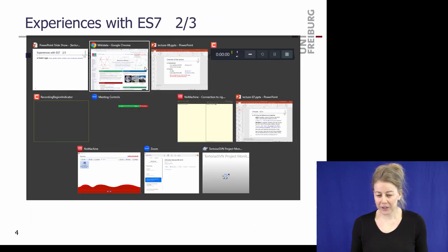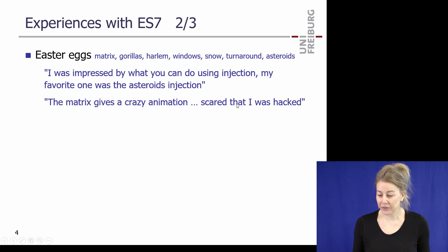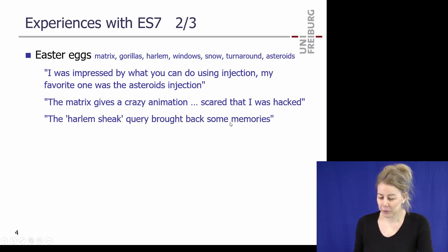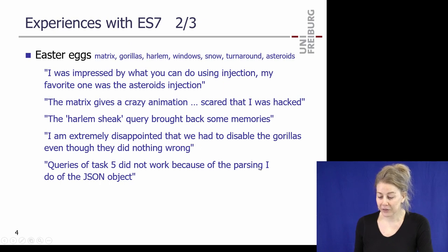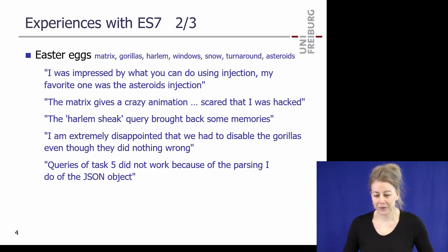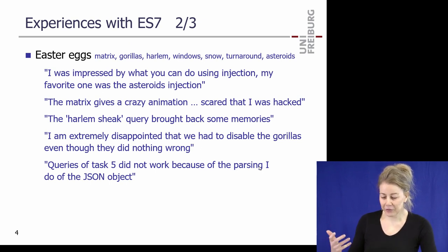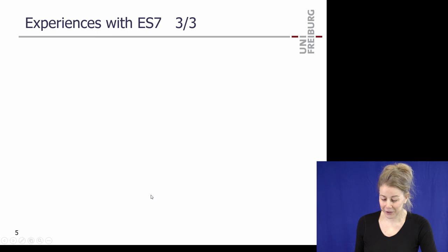There were also some Easter eggs in the data. Student reactions included: impressed by what one can do, favorite was the asteroids game, the Matrix animation, scared that they were hacked, and 'Harlem Shake brought back memories.' Some said it didn't work because of how they parsed the JSON object - they did something special. Some realized there were hidden code injections in the data and fixed it; others couldn't see the animations. Students wrote 'very cool what you can make a browser do, but also worrying' and 'I feel violated - the data betrayed me.'